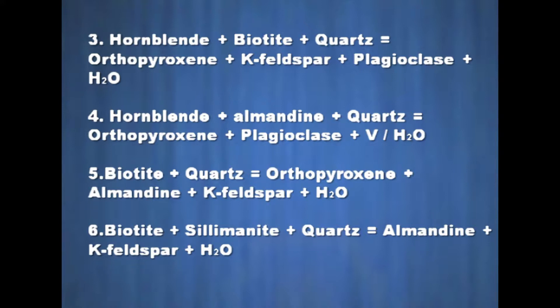Fifth reaction: biotite plus quartz gives rise to orthopyroxene plus almandine plus protofelspar plus water. Reaction sixth: biotite plus sillimanite plus quartz gives rise to almandine plus protofelspar plus water. All reactions involving hornblende, biotite, anthophyllite are divariant on account of varying Fe and Mg ratio and also condition of P(water) less than P(total). That is, the reaction starts at certain temperatures but all equilibrium phases will be present over a temperature range until with rising grade all hornblende, biotite, anthophyllite disappear. Thus two sub-facies — hornblende granulite and pyroxene granulite — are recognized.